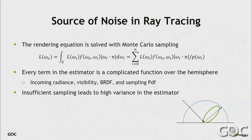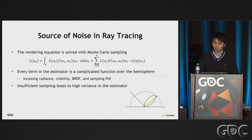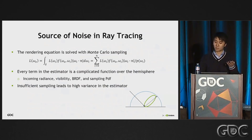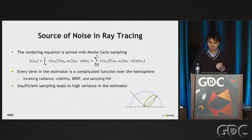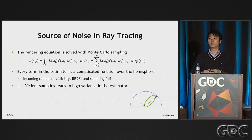Let's begin by briefly looking at why there's noise in ray tracing-based rendering. The rendering equation is basically an integral of several complicated equations defined over the hemispherical domain over some certain shading points. There's incoming radiance which might have a really complicated visibility term. There's also BRDF which is tricky to sample and causes noise from sampling. And in terms of global illumination, the incoming radiance itself is also recursively defined as the outgoing radiance at some other surface point in the scene.